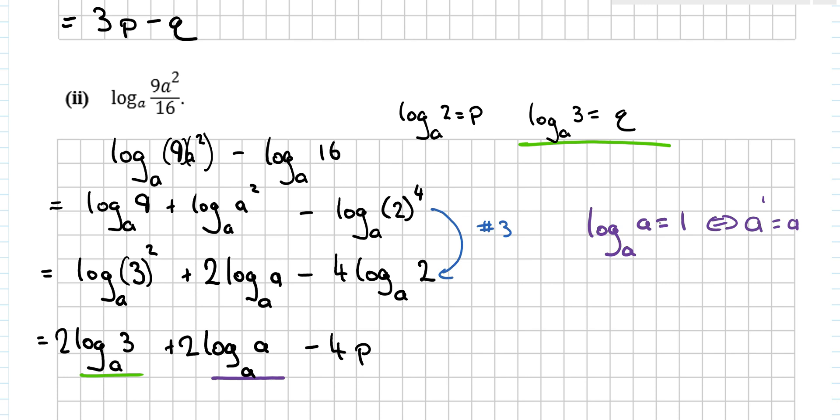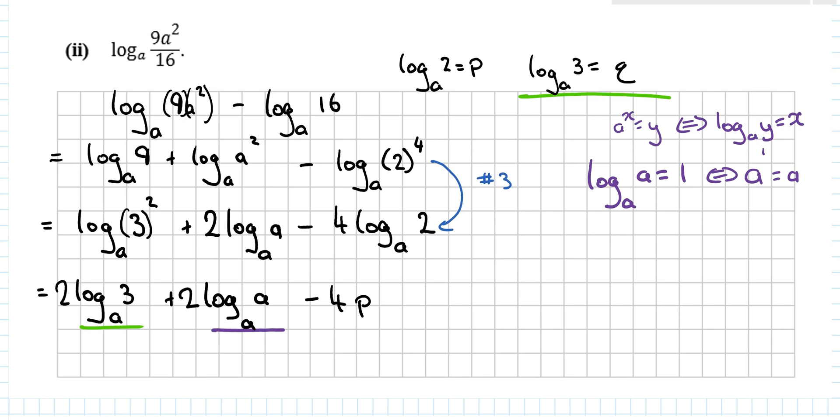Top right-hand corner, page 21, that rule in the top right-hand corner, a^x equals y. Log base a of y equals x. If you change it from log to index form, you'll see why that works out. So finishing it off then, let's say two more lines. This is 2q plus 2 times 1 minus 4p. And maybe just a little reordering. 2q minus 4p plus 2. And that's it, done.